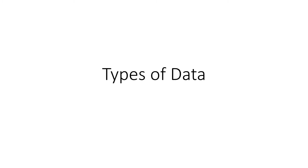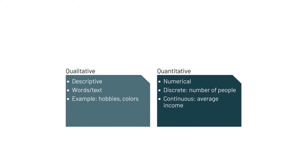So let's start our discussion with types of data. We can majorly classify our data into two parts: one is categorical data and another one is numerical data. In other words, we can say qualitative data and quantitative data. Qualitative data is descriptive in nature - like how I am seeing something, what is my feeling about a particular product, how I am getting the taste of a food or the smell of a flower - all these things are words or text, not numerical.